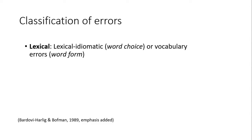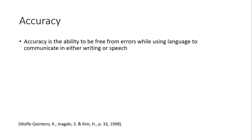Problems with word choice involve using the wrong word but it doesn't interfere with the meaning of the message — someone can still understand the text even if the word is awkward. A wrong word vocabulary error is more serious in that the word actually interferes with the meaning. So we have three types of accuracy errors: syntactic, morphological, and lexical. Accuracy is the ability to be free from errors while using language to communicate in either writing or speech.